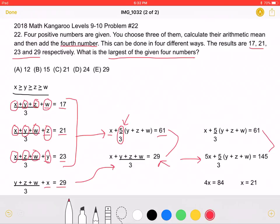With these two equations, we can subtract them from each other, getting rid of this. And we will get that 4X equals 84, meaning that X must be equal to 21.